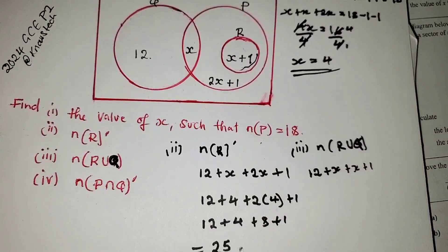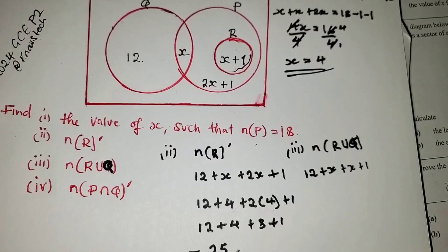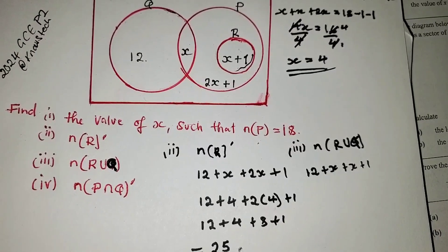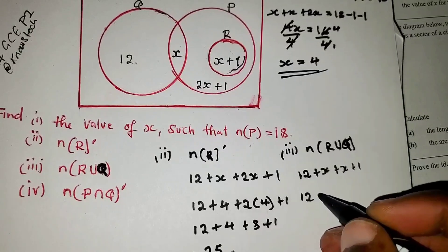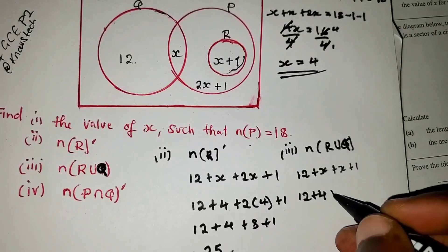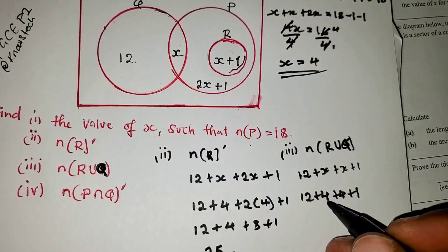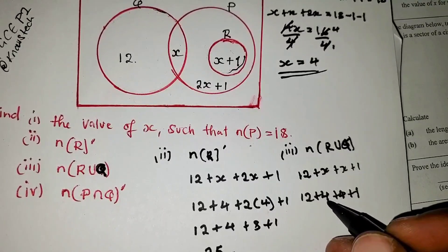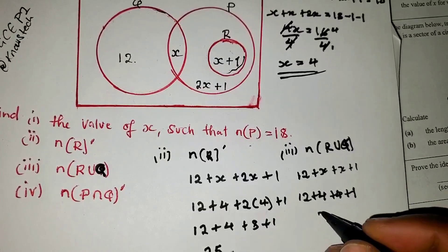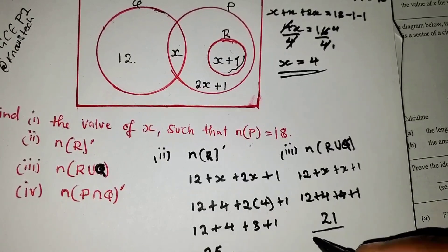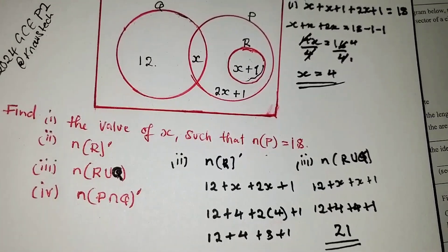Then let's substitute. So when you substitute here x with 4, it will be 4 plus 4 plus 1. So 12 plus 4, this is 16. 16 plus 4 is 20. 20 plus 1 is 21.